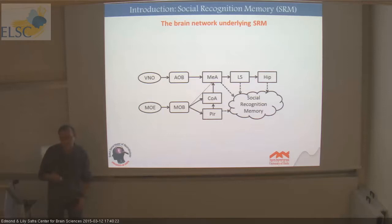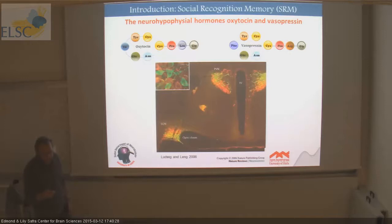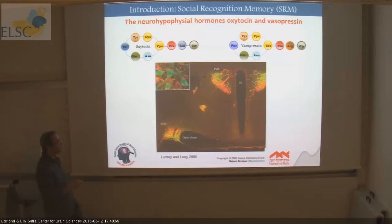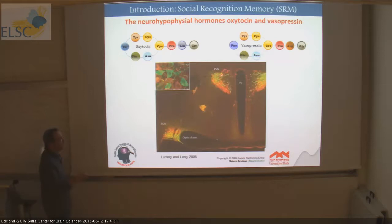Not only do we have a dedicated network for social information, but social cognition memory depends on the activity of several neuromodulators. The most famous are the neurohypophysial hormones oxytocin and vasopressin — twin neuropeptides, actually a gene duplication. They are both synthesized mainly in the supraoptic and paraventricular nuclei of the hypothalamus. Non-overlapping populations of magnocellular neurons express each peptide. The peptides are released to the blood via the pituitary, but also from the PVN to many brain areas, including areas expressing the oxytocin receptor.